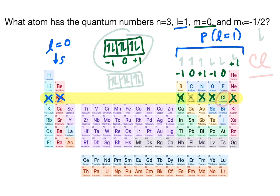And now m sub s equals negative 1 half. So what does that tell us? That tells us that our electron is spin down. So as noted back over here, let's redo this.